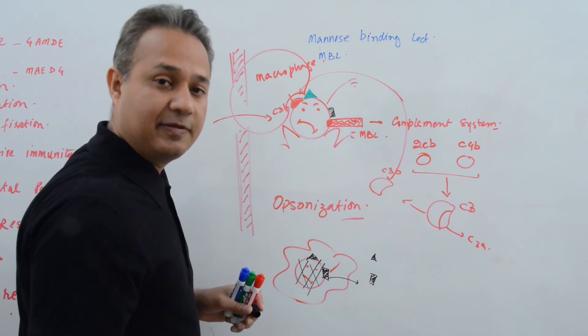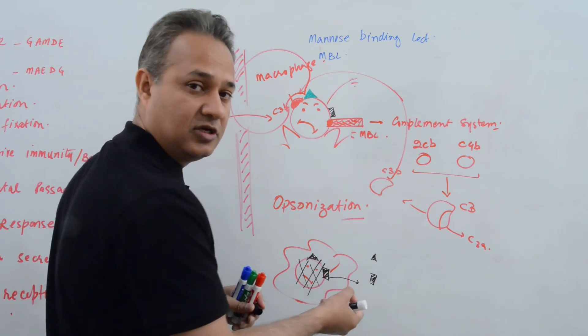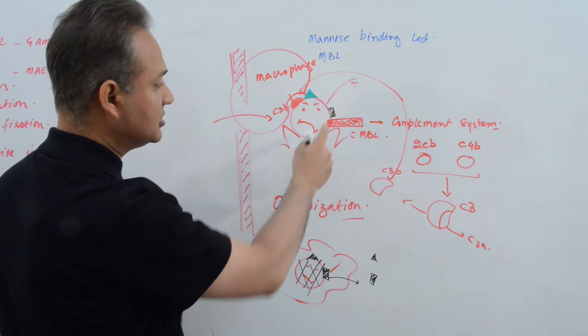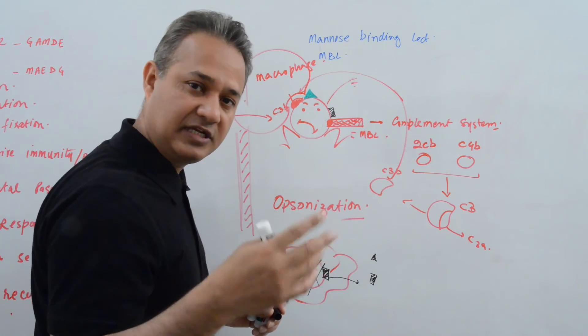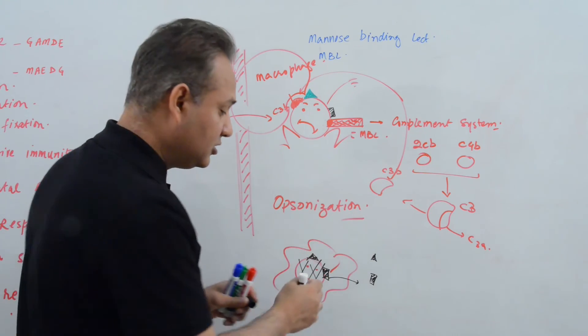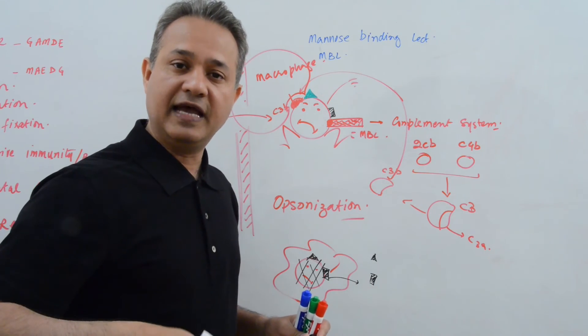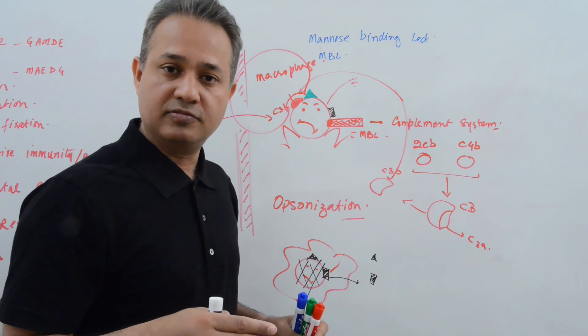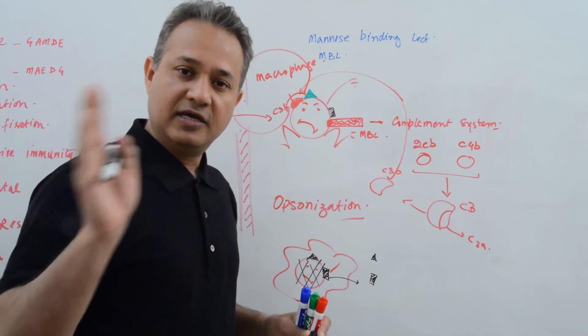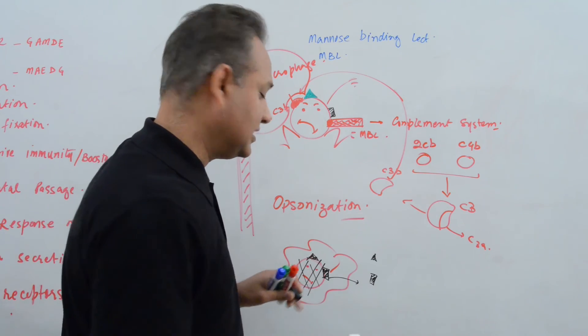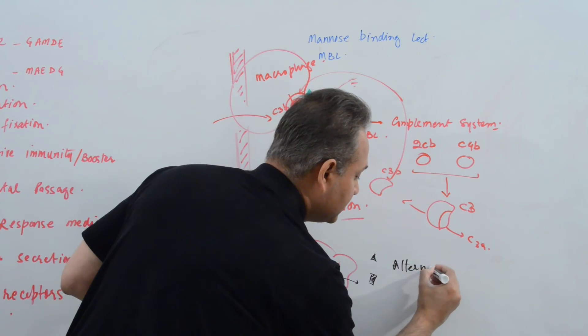The alternate pathway of the complement fixation is where these endotoxins, not exotoxins - these were exotoxins. The endotoxin, that is a break product from inside the pathogen bacteria after it has been broken up. Those endotoxins that have been released would cause the activation of the complement system. That activation has a different chemical pathway. That is alternate pathway.